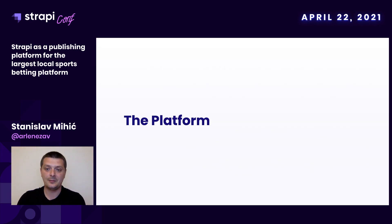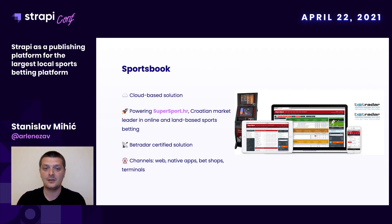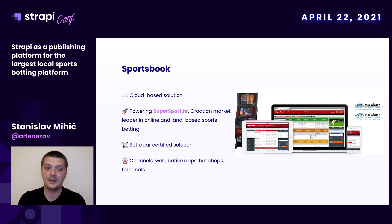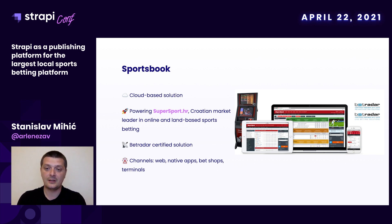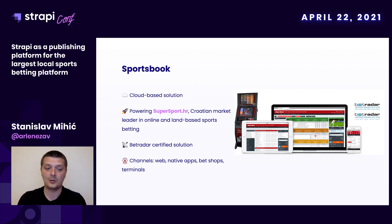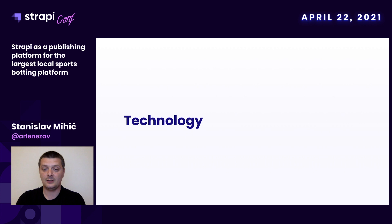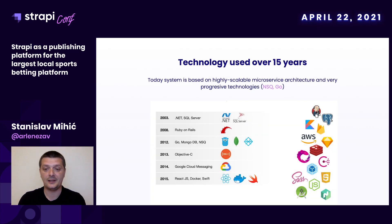About the platform: we are a product-based company. Our main product is called Sportsbook. It's a cloud-based solution, right now powering supersport.hr, a Croatian market leader in online and land-based sports betting. It is a fully certified solution. We have covered many digital channels and platforms like web, native apps, native mobile apps, bet shops, local store, and interactive spot betting terminals. The technology behind our product is based on highly scalable microservices architecture and very progressive technologies — for example, NSQ, Golang, and others.